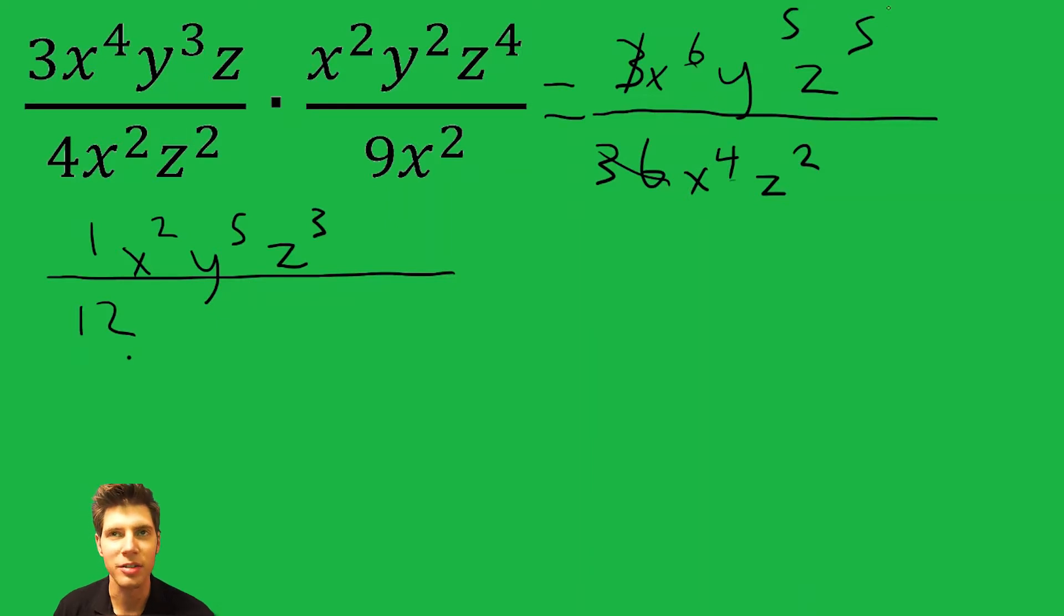Or the other way you can think of it is 5 z's on top, 2 on bottom. After they cancel, there's only going to be 3 on top. Actually, I can show you that really quick. 5 z's on top, that's what z to the 5th means. And then z squared is 2 z's on bottom. Now after we cancel them, notice how many we have left. We have 3 left.